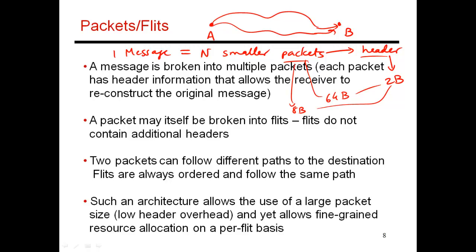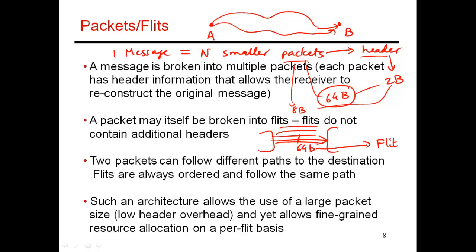Packets are kept relatively large to reduce header overhead. But if you look at a link between two routers, that link may only be 64 bits wide, meaning you have 64 different wires. At a time, you can only ship 64 bits of data across from one router to the next in a given cycle. The unit of what gets transferred in one cycle over one link is called a flit. So a flit in this example is 64 bits wide. Taking a 64-byte packet and breaking it up into these 64-bit units gives you eight 64-bit flits, and each flit goes over the network one cycle at a time.